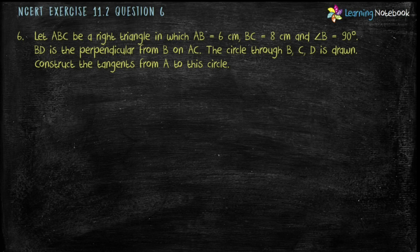Students, in this question, first we have to construct a right triangle in which AB equals to 6 cm, BC equals to 8 cm, and angle B equals to 90 degrees. So, let's construct this triangle.